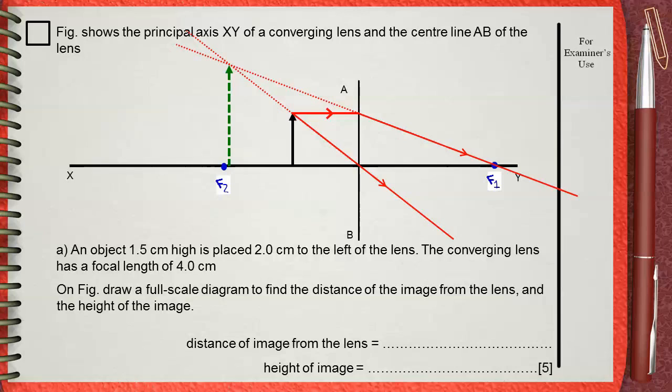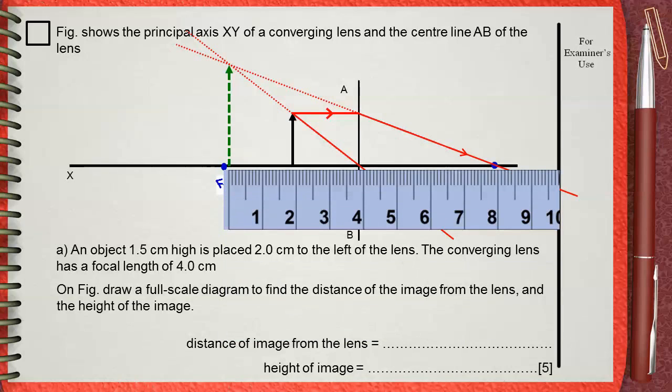This is our ray diagram. Now you need to use your ruler to measure the distance between the image and the lens. As you see it's about 3.9 centimeters which is shown by the ruler.